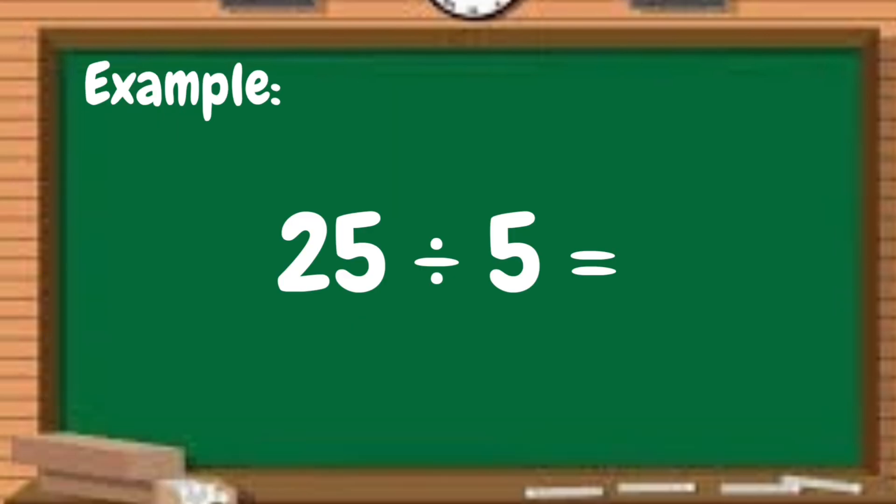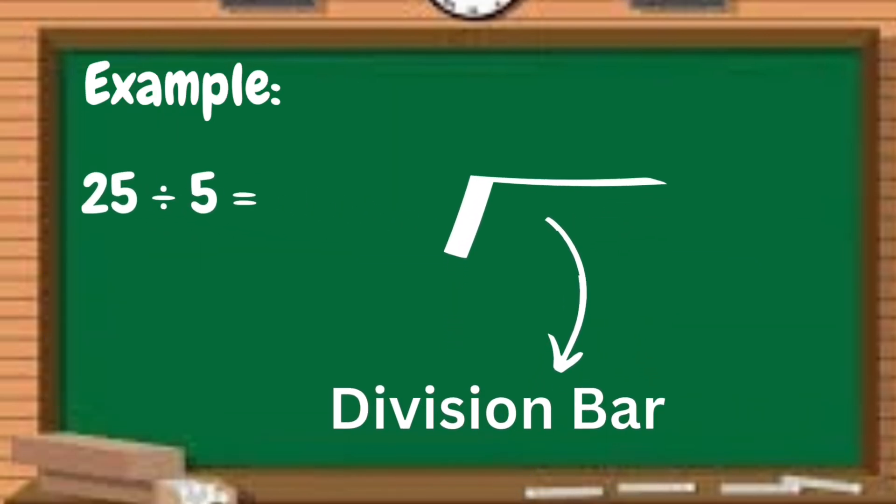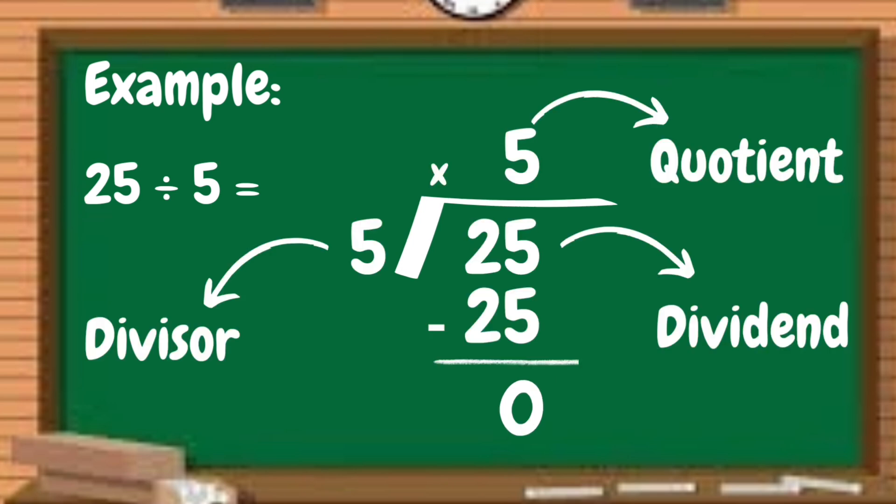We have here an example. 25 divided by 5. In division, we will use division bar. Inside the division bar is the dividend. Outside the division bar are the divisor and the quotient. So in this problem, our dividend is 25 while our divisor is 5 and the quotient is 5.